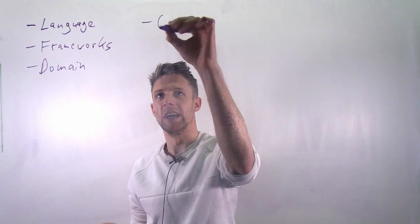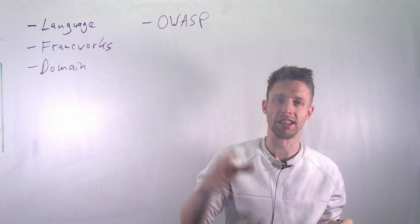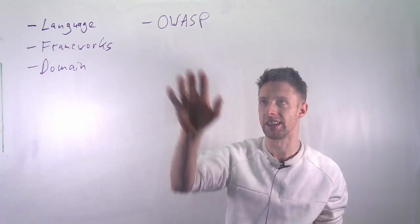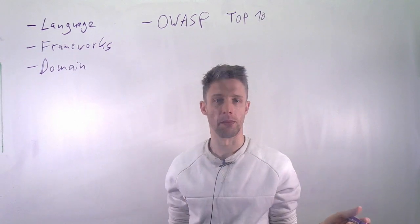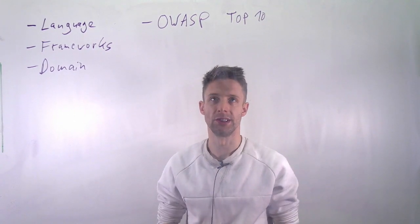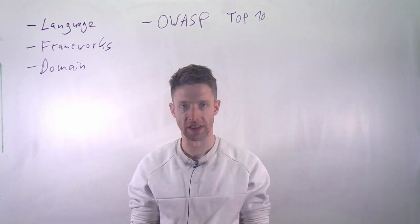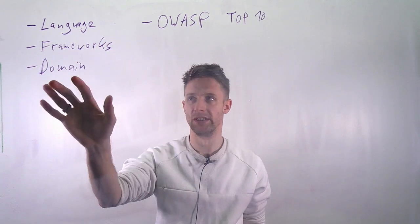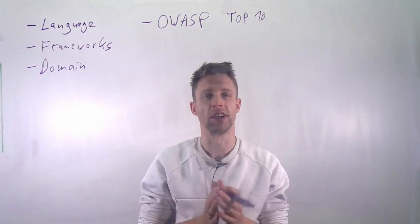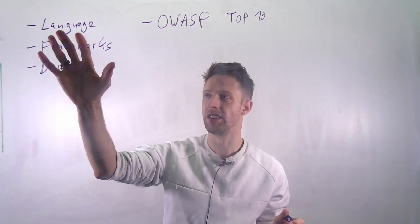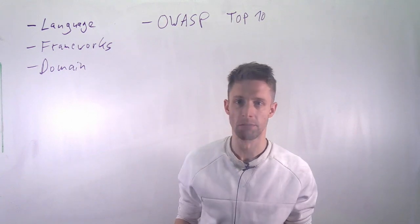For example, some of you might be familiar with the OWASP Top 10. OWASP is a nonprofit organization focused on web security, and they publish the OWASP Top 10 list of the most common web security issues. They also have a list for mobile applications — advice specific to these kinds of domains. They try to be general enough, not tied to a specific language or framework, but if you use a specific language you may address these problems differently.